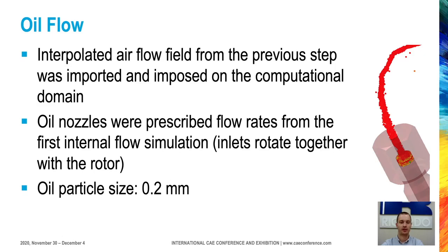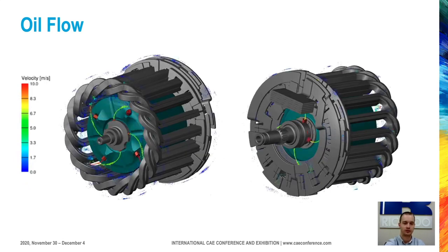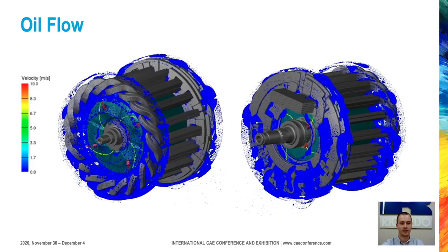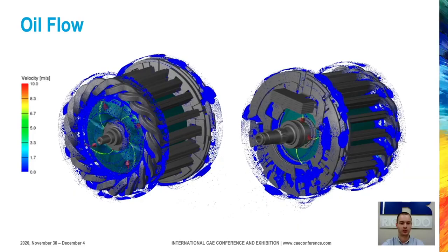Now we come to the last third CFD simulation of oil. As discussed, we used the air flow field from the previous simulation and also the flow rates for the nozzles from the first simulation. The inlets were placed right at the nozzle, so we didn't have to solve for the internal flow anymore, which helped reduce the total runtime. The oil particle size was 0.2 millimeters as discussed before. We have a view of each side of the motor, and as you can see, the oil starts accumulating on the windings and at the very end starts dripping from the windings.